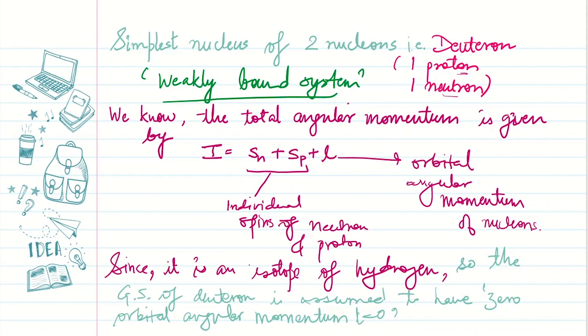This is a weakly bound system. The total angular momentum is given by the spin of the neutron, the spin of the proton, and the orbital angular momentum of the nucleon.